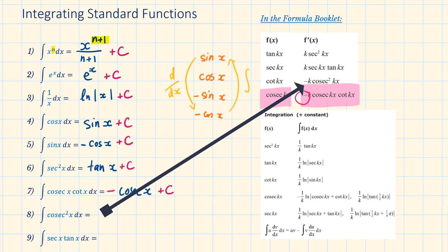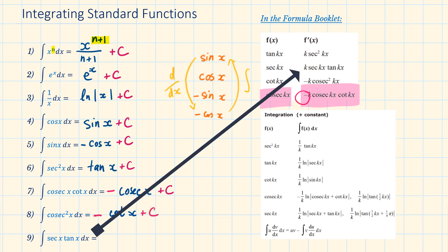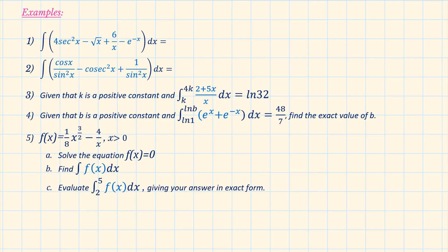The standard function from question 8, cos x squared, can be found in the same list. Again, here we have a negative, so we have to take that into account. The solution is minus cos x plus c. The solution to question 9 is sec x plus c. Let's see how we can apply these standard functions in some more complex examples.